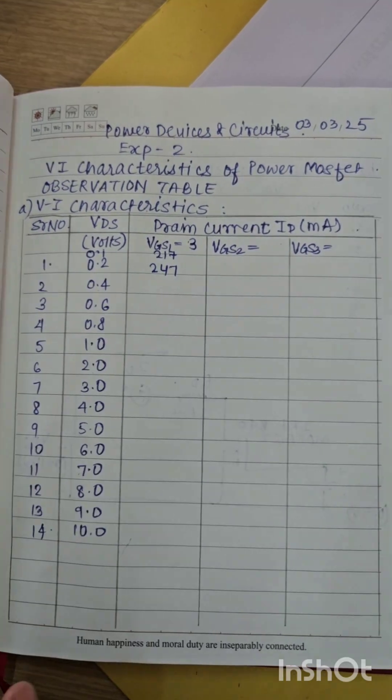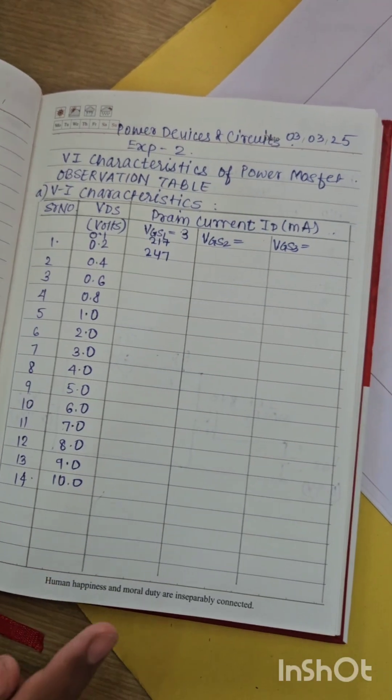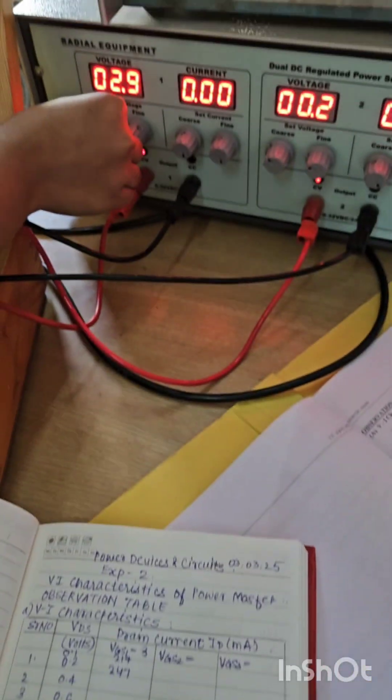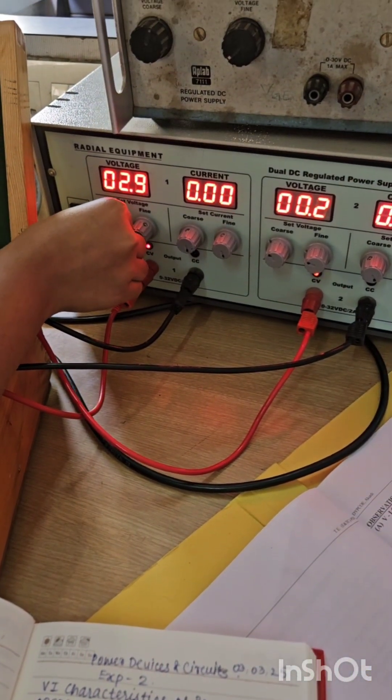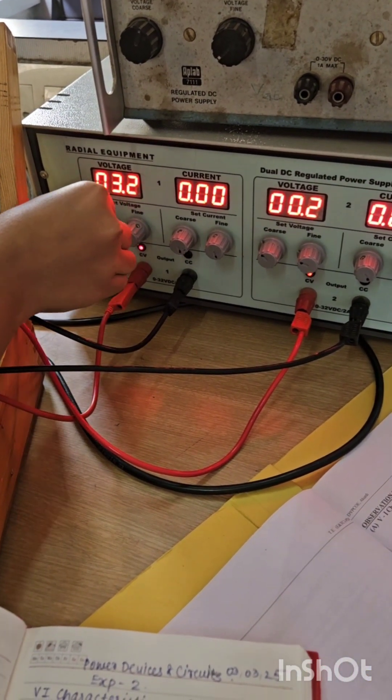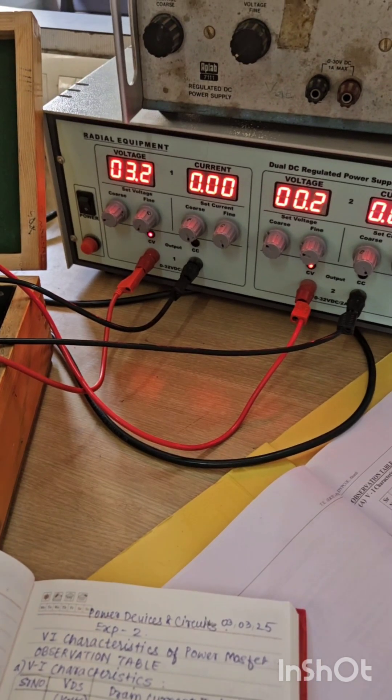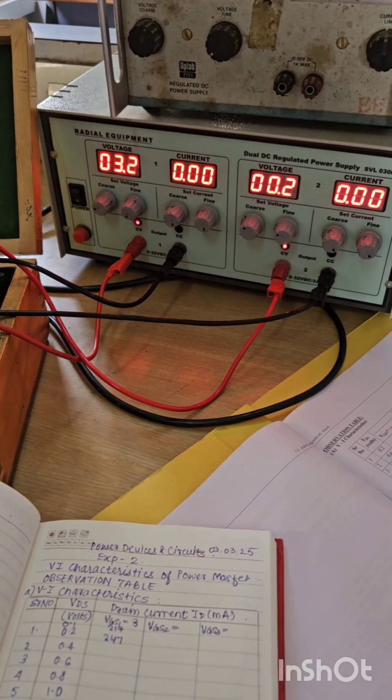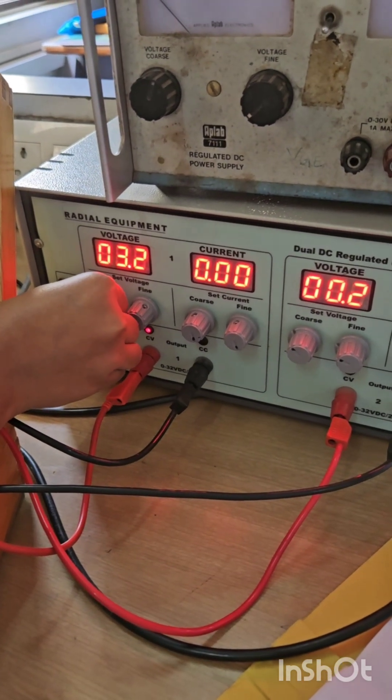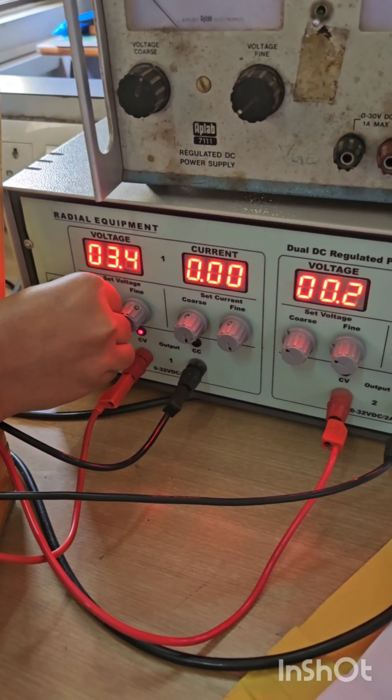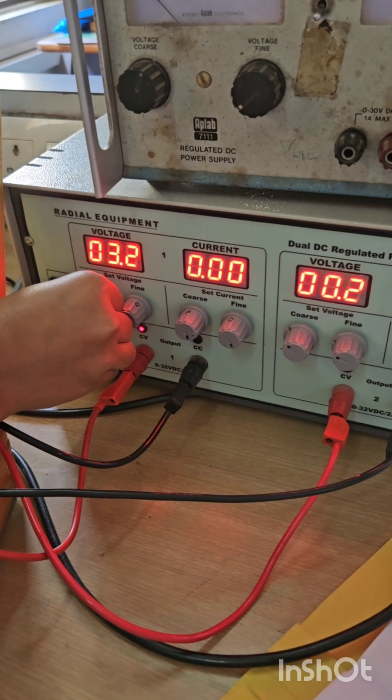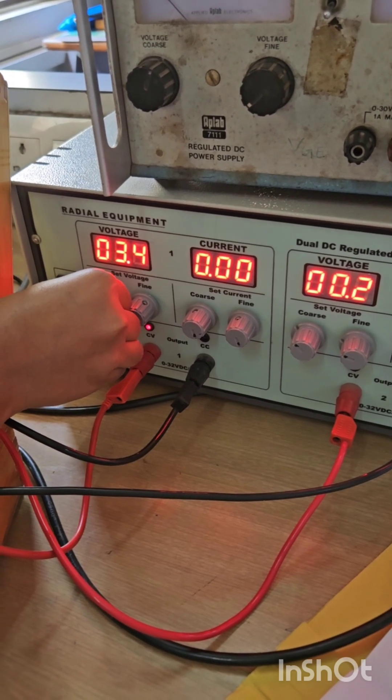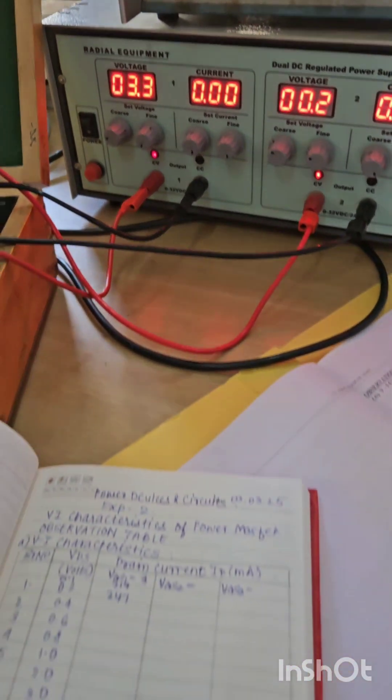For VGS2, set VGS to 3.2 and repeat the previous process which we followed for VGS1. For VGS3, set the voltage to 3.4 and repeat the previous process for getting the readings of ID.